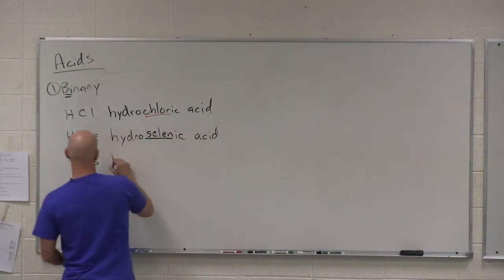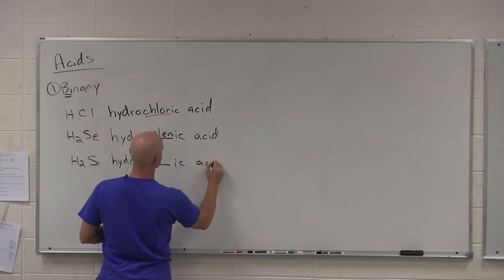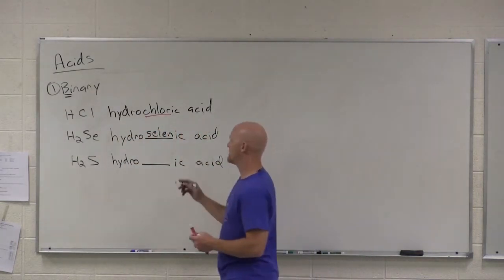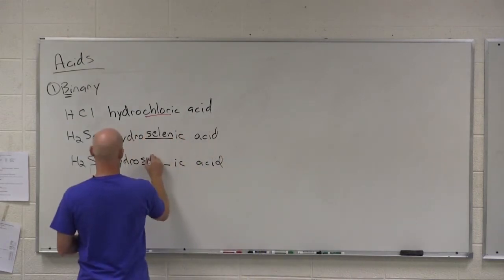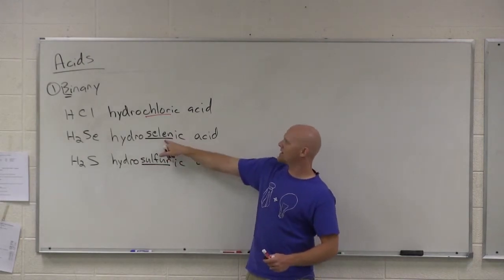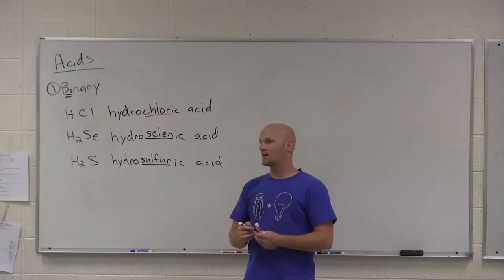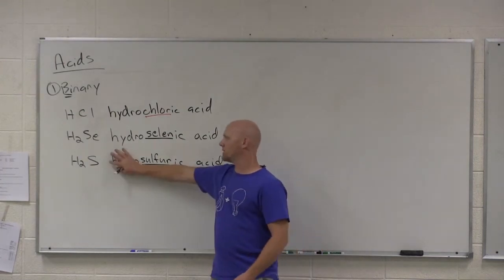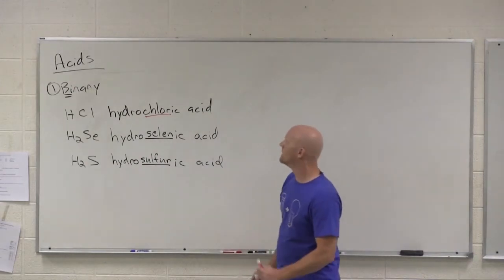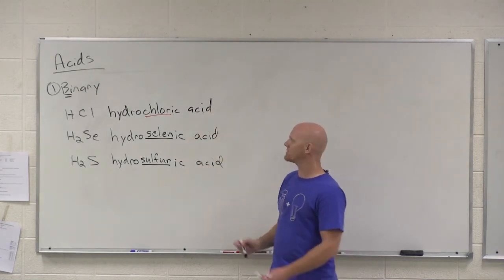This one here as well will say hydro, save some room, and then -ic acid. And so which one is this? Hydrosulfuric. Yeah, hydrosulfuric. So they use the whole word here. They cut off the -em in selenium there. You kind of got to know. But in this case, hydrosulfuric acid, which is tricky because there's also just a plain old sulfuric acid that's not hydrogen sulfide. It's H2SO4, as we'll see in a second. But this is how you name binary acids. If you know hydrochloric acid, the rest are pretty easy to follow suit.